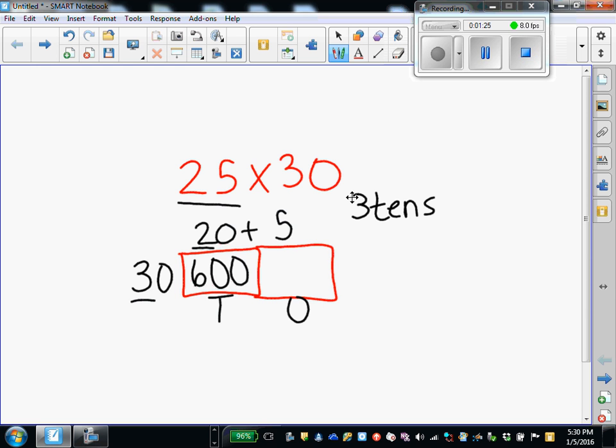And then moving into multiply by the ones. 30 times 5. 3 times 5, 15. Add the zero. So 30 times 5 is 150. Add our products together. Make sure you line up your place value nice and neat. And you get 750.